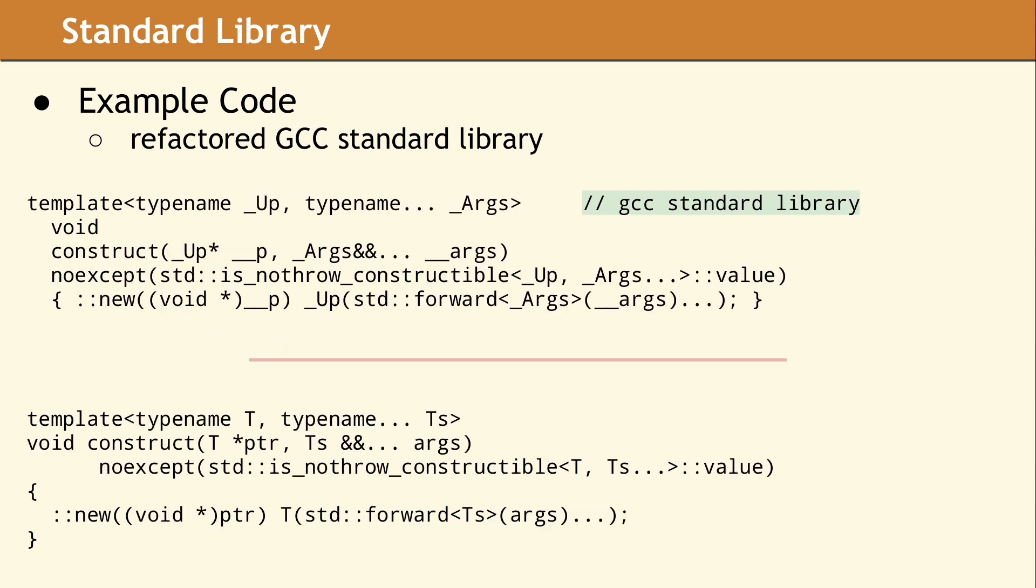We also adjusted the formatting and changed a few variable names to improve readability. Now it is easier to see the call to placement new and the forwarding of the constructor arguments. Refactoring the method from the GCC standard library involves similar modifications. Again, most of the work involved changing identifier names. There is no technical reason why we changed the template parameter name from args to tees. Using tees is our preference, but both are legal in user application code.